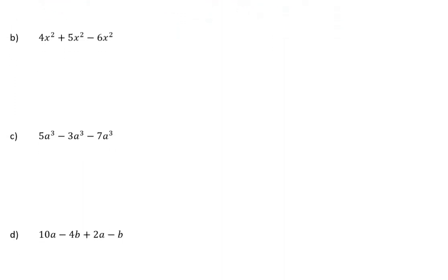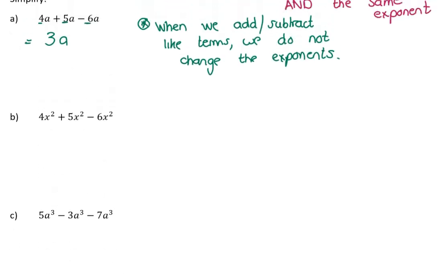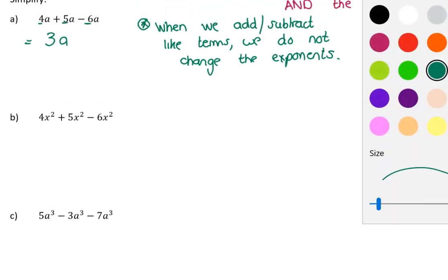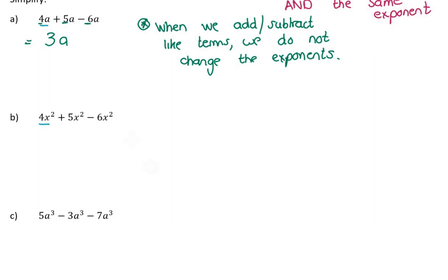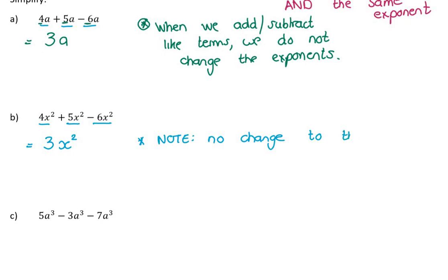This next example is slightly different because now I'm working with x squared. But if you notice, it's essentially the same question — 4x² + 5x² − 6x². I've deliberately done that so you can see that having exponents in the mix doesn't change a thing. I'm still adding and subtracting like terms, so these will still remain purple smarties. 4 purple smarties plus 5 is 9, minus 6 leaves 3. So the answer is 3x². Very important note: no change to the exponent. Don't let the fact that we've now done exponents confuse us.